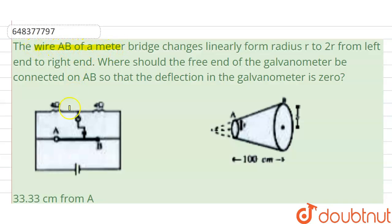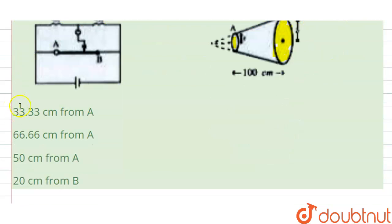The wire AV of a meter bridge changes linearly from radius r to 2r from the left end to the right end. Here the radius is r and this end is 2r. The question asks: where should the free end of the galvanometer be connected on AV so that the deflection in the galvanometer is zero? The options given are 33.33 cm from A, 66.66 cm from A, 50 cm from A, and 20 cm from B.